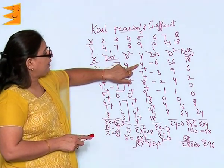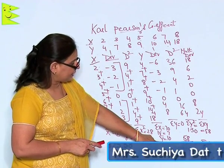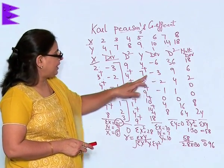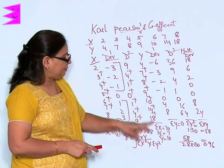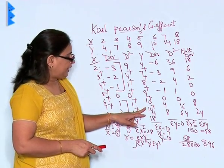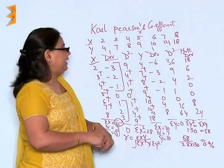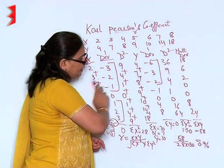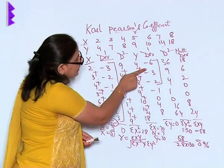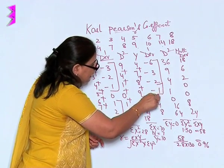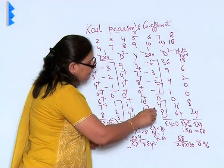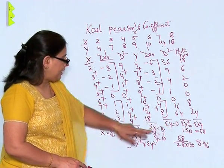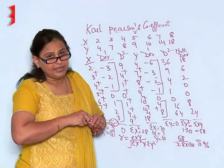Again I draw the deviation using Y-bar equal to 10: 4 minus 10 gives minus 6, 7 minus 10 gives minus 3, 8 minus 10 gives minus 2, 9 minus 10 is minus 1, 10 minus 10 is 0, 14 minus 10 is 4, and 18 minus 10 is 8. The negative sum is 6 plus 3 plus 2 plus 1 equals 12, and the positive sum is 4 plus 8 equals 12. So sigma Y deviation is 0, confirming the sum is correct.